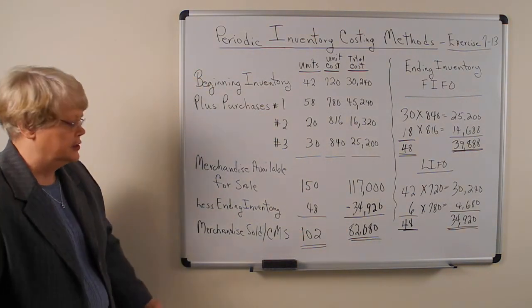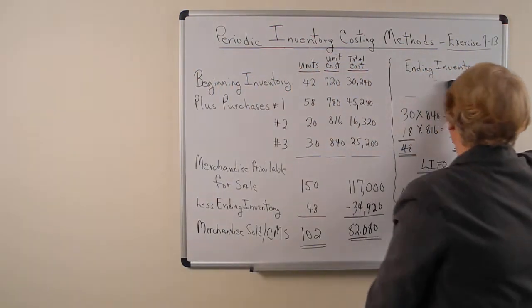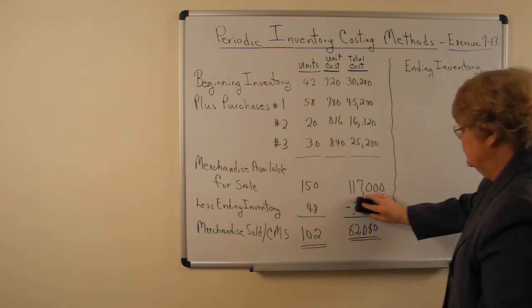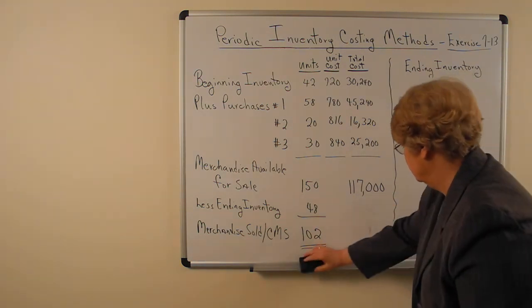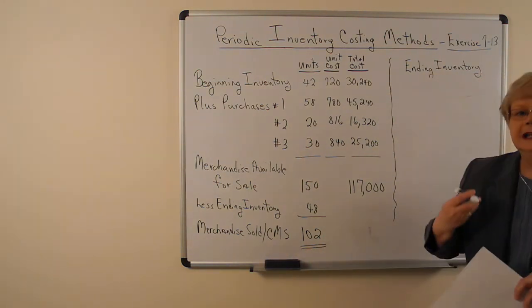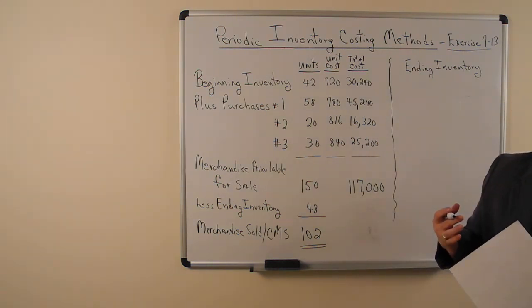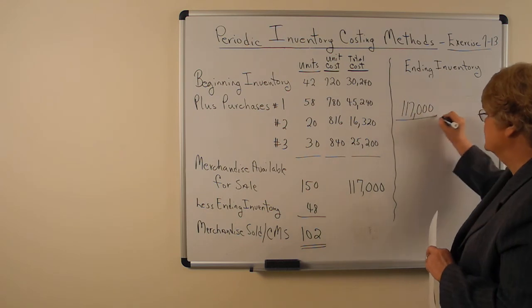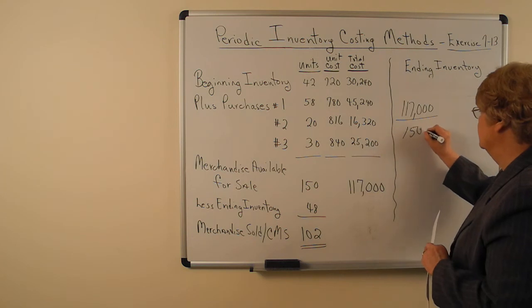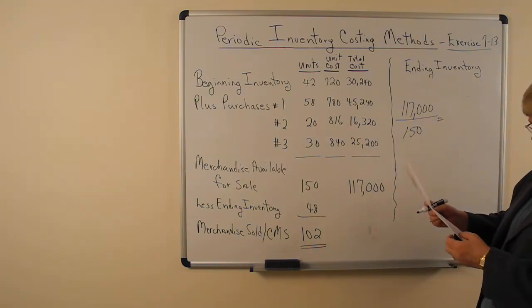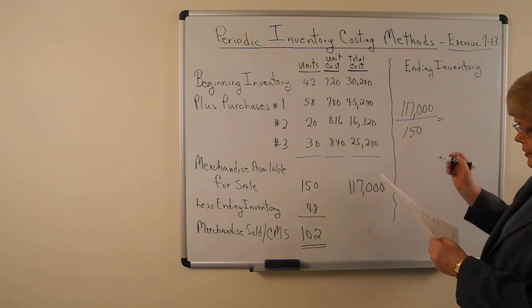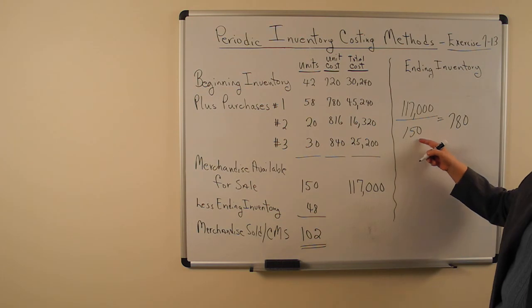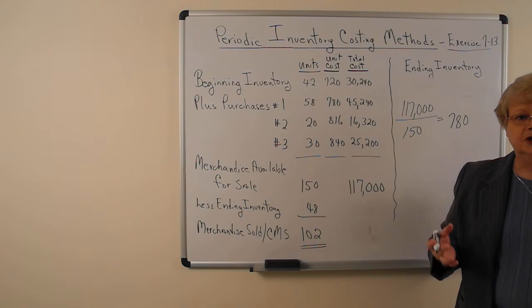The other method is weighted average. I'm going to erase the FIFO and LIFO work — you can go back in the video if you need to look at it. To get the weighted average for the periodic system, we take the total cost in dollars, which is $117,000, and divide by the total units available, which is 150. So our average cost is $780 per unit.